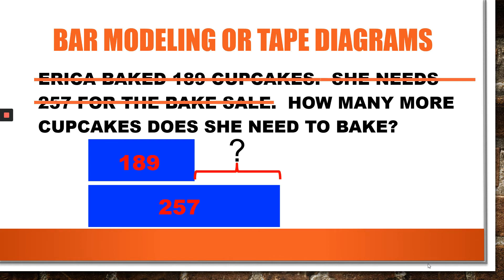We're going to approach it two different ways. A third grader might just write the problem down: 257 minus 189. One of the things that happens with bar modeling is it keeps children from thinking more means add — it helps them to see what the problem means. So they may do this: 257 minus 189 is 68.